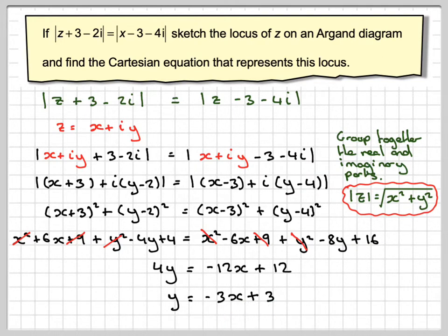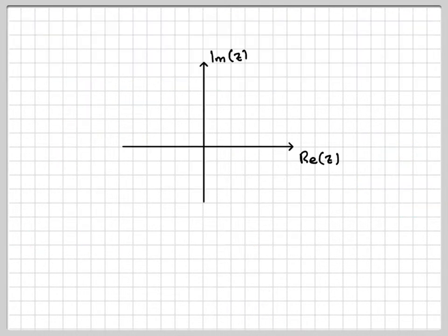So this is represented by drawing the line minus 3x plus 3. So if we now draw our Argand diagram, we mark on our two complex numbers. This complex number will be minus 3 plus 2i, and this one will be 3 plus 4i.